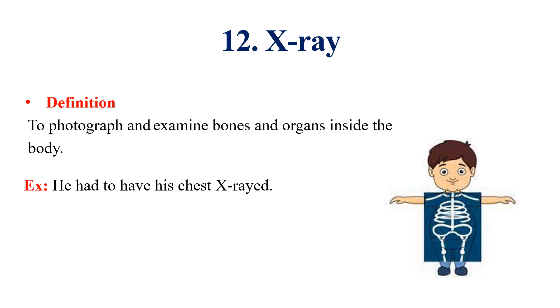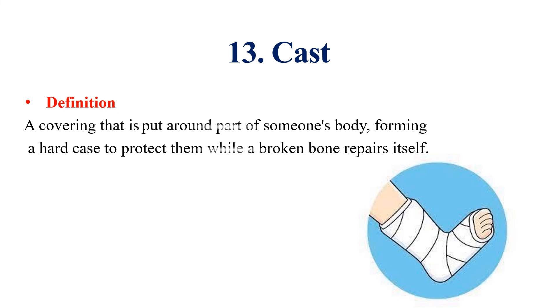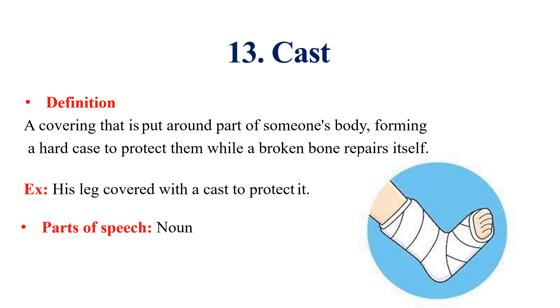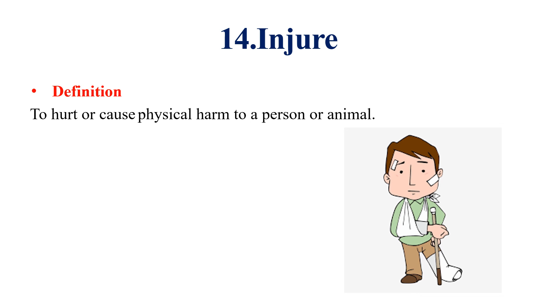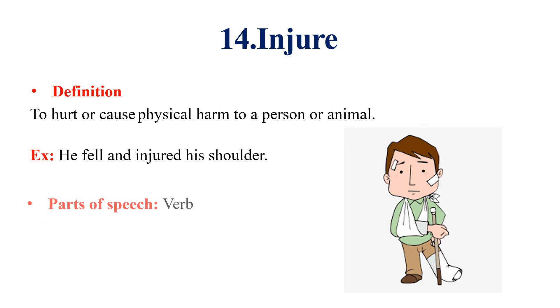Cast: a cast is a covering that is put around part of somebody's body, forming a hard case to protect them while a broken bone repairs itself. Example: His leg was covered with a cast to protect it. This word is a noun. Bandage: a bandage is a long, narrow piece of cloth that is tied around an injury. This word is a noun. Injured: to injure means to hurt or cause physical harm to a person or animal. Example: He fell and injured his shoulder. This word is a verb.